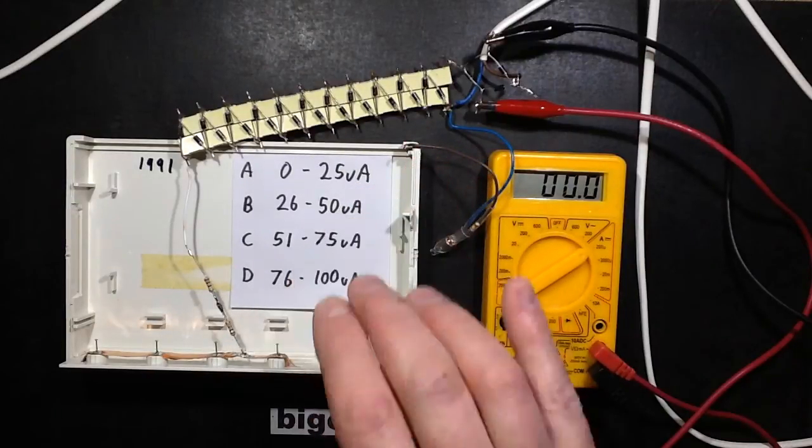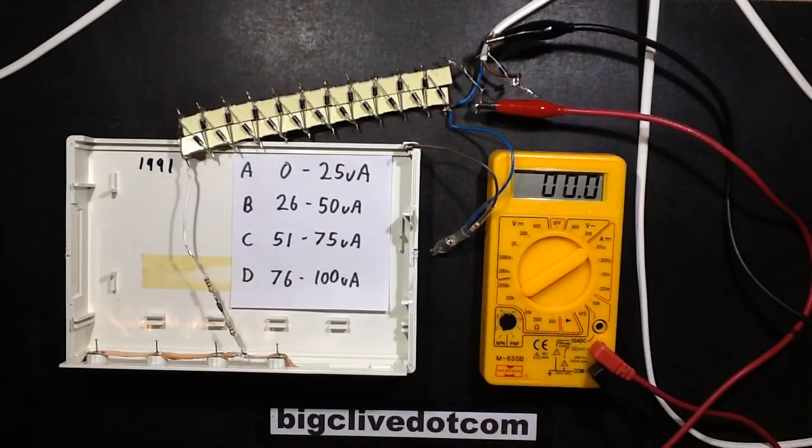Do you think it's A: 0-25 microamps, B: 26-50 microamps, C: 51-75 microamps, or D: 76-100 microamps? Place your bets now.